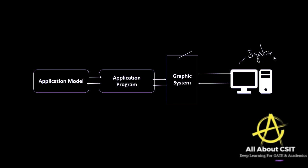The system here is a process which performs the operation. If you want to work on computer graphics or art-type concepts, the processor supports a graphic system. An application model is required to create art, and an application program connects to the graphic system. Whatever transformations you require can be performed in the graphic system and displayed on the screen.